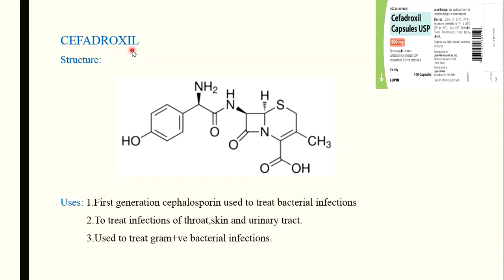The next structure is cefadroxil. Cefadroxil contains the cephalosporin core group. At the third position there is a methyl group in place of R, and at the fourth position there is a carboxylic acid group, which is common in the general structure. At the amide position, there is a phenol group attached, and at the para position of that phenol group there is a methylamine group.